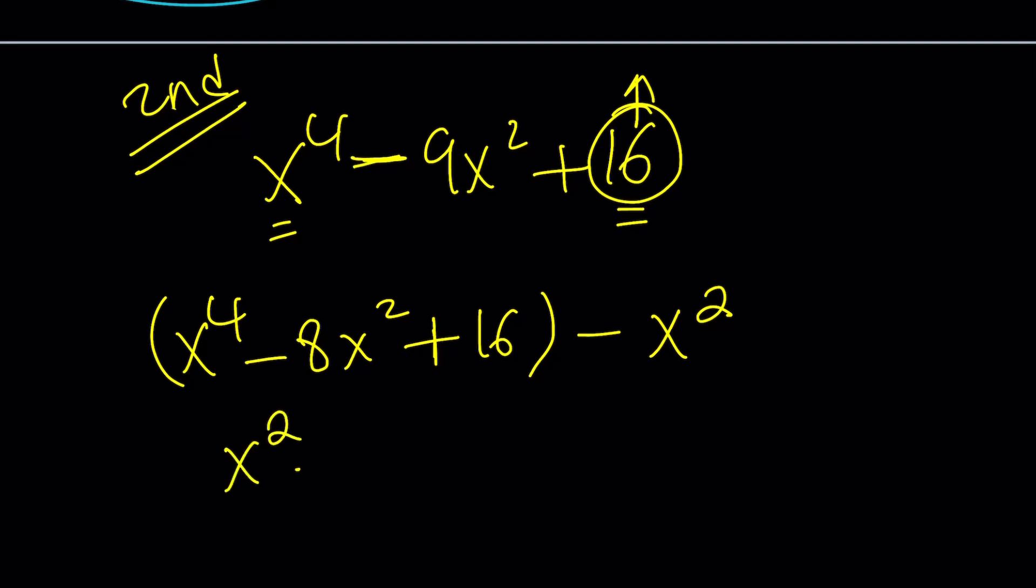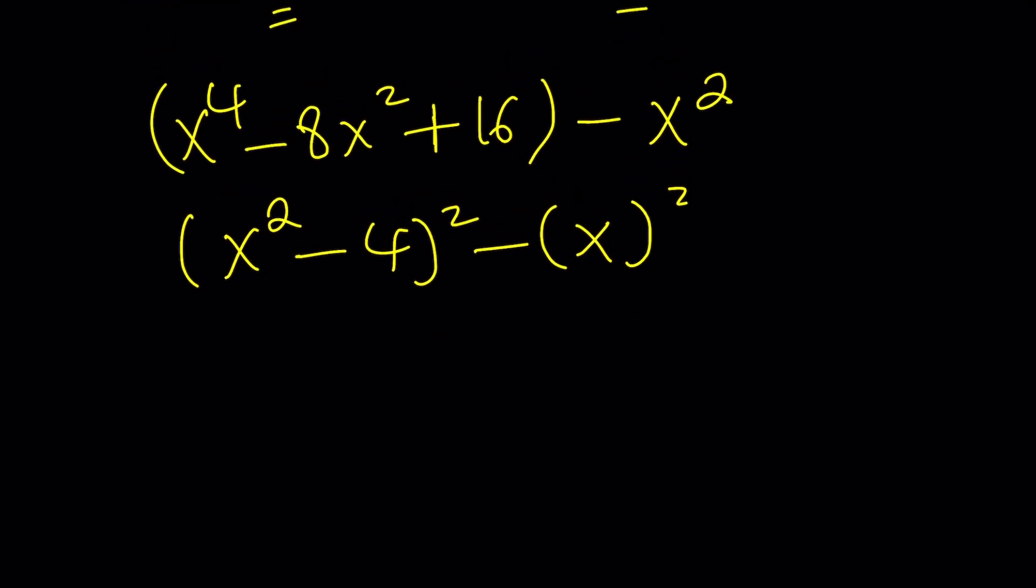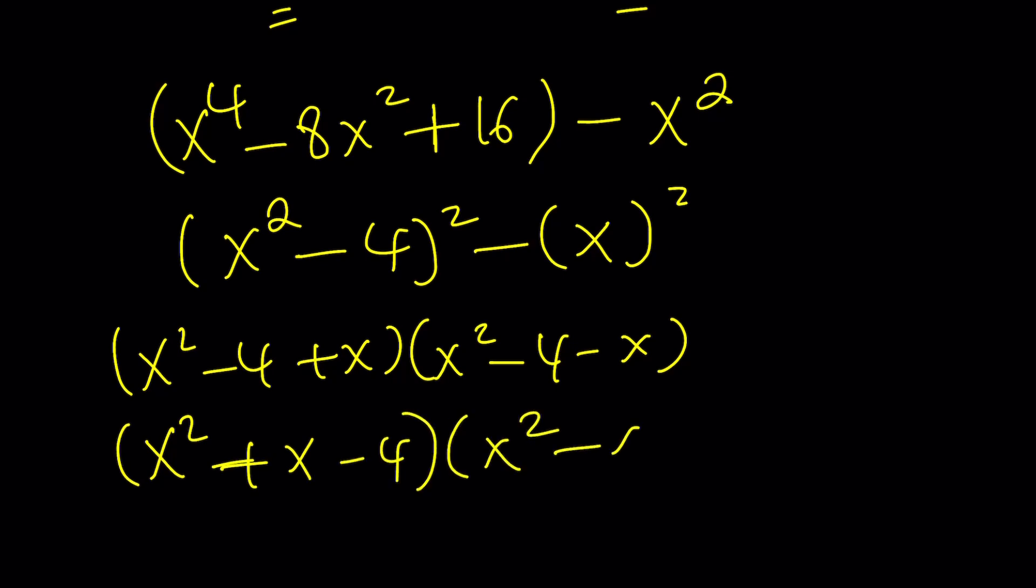So, you now have x squared minus 4 squared minus x squared. And now you can factor this by using difference of two squares. x squared minus 4 plus x, times x squared minus 4 minus x. Or you can switch these around and write it as x squared plus x minus 4, which is in standard form, and x squared minus x minus 4. As before,